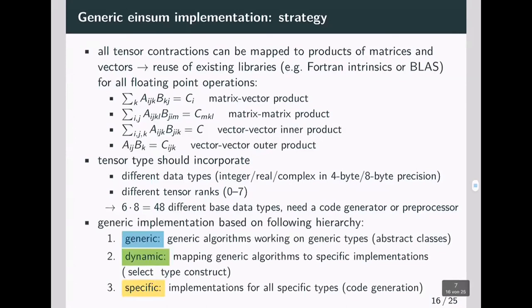The implementation is based on the following hierarchy. On the API level, you have a generic implementation, which is a generic algorithm working on generic types or abstract classes in Fortran. You don't really care about the data, you just implement the algorithm. On the actual specific implementation, you do implementations of all specific types. Because this is very repeated code, you generate this by some other tool. The in-between layer, which I call dynamic, maps the generic algorithms to very specific implementations, which is done by the select type construct in Fortran.